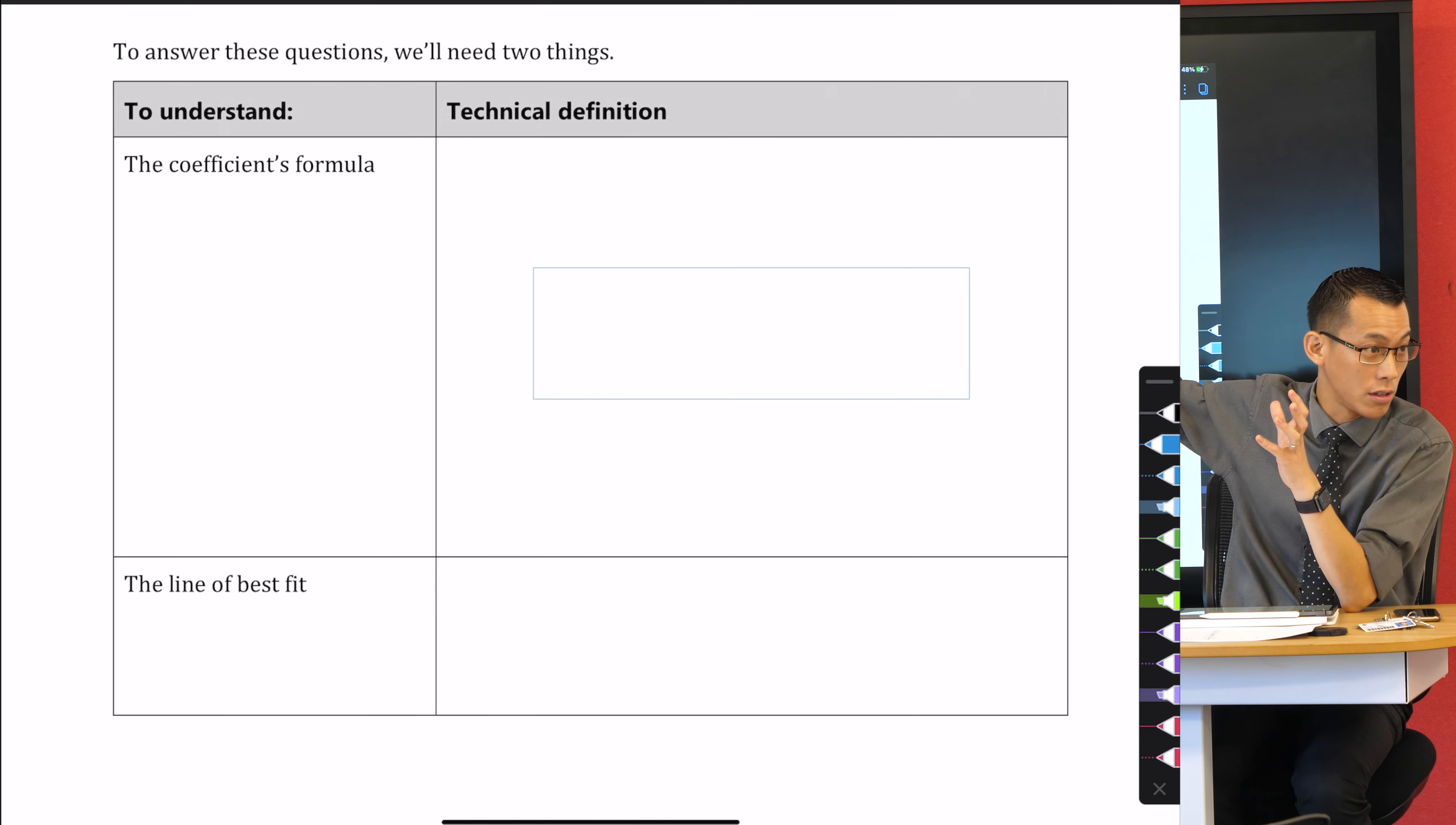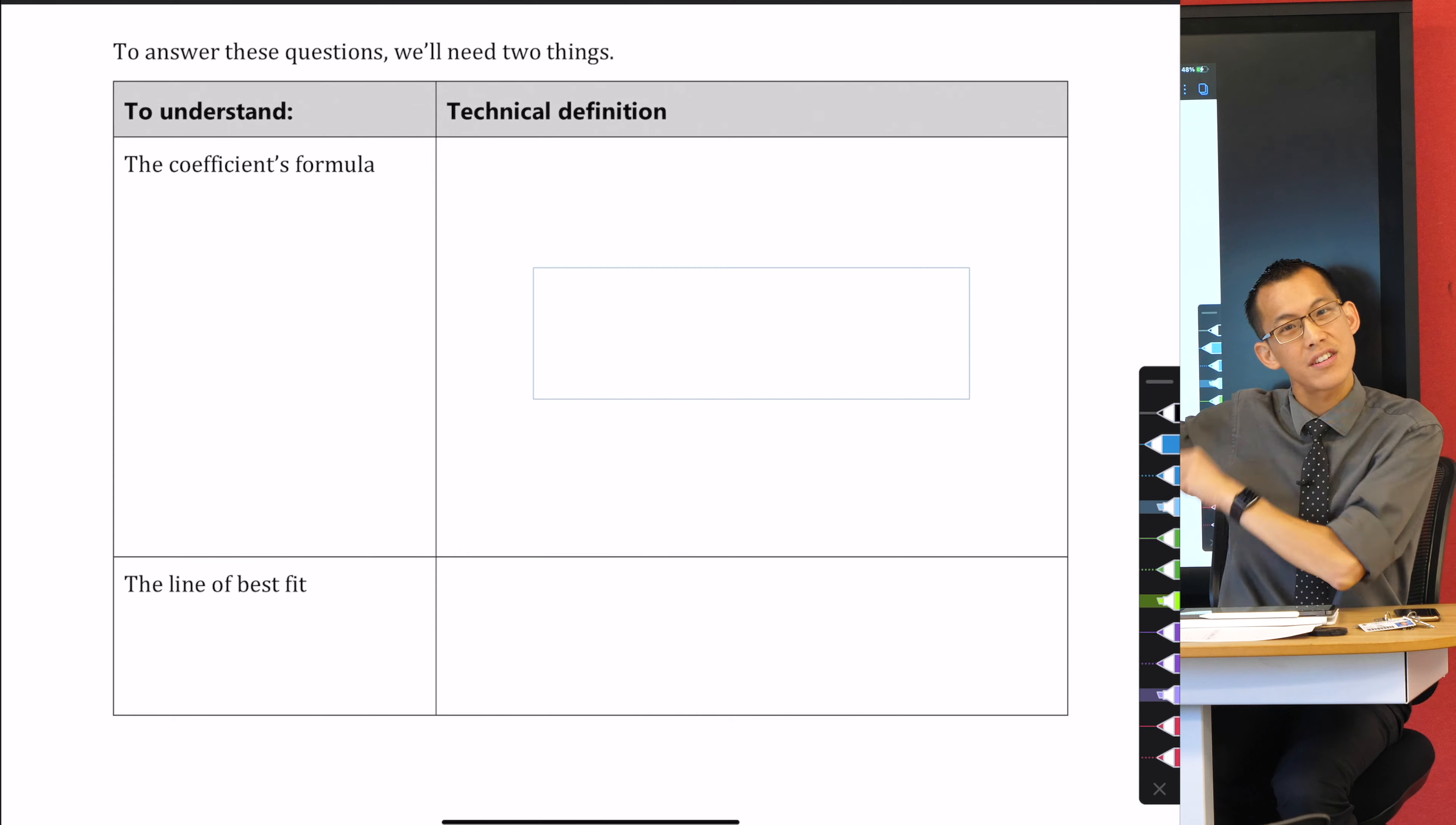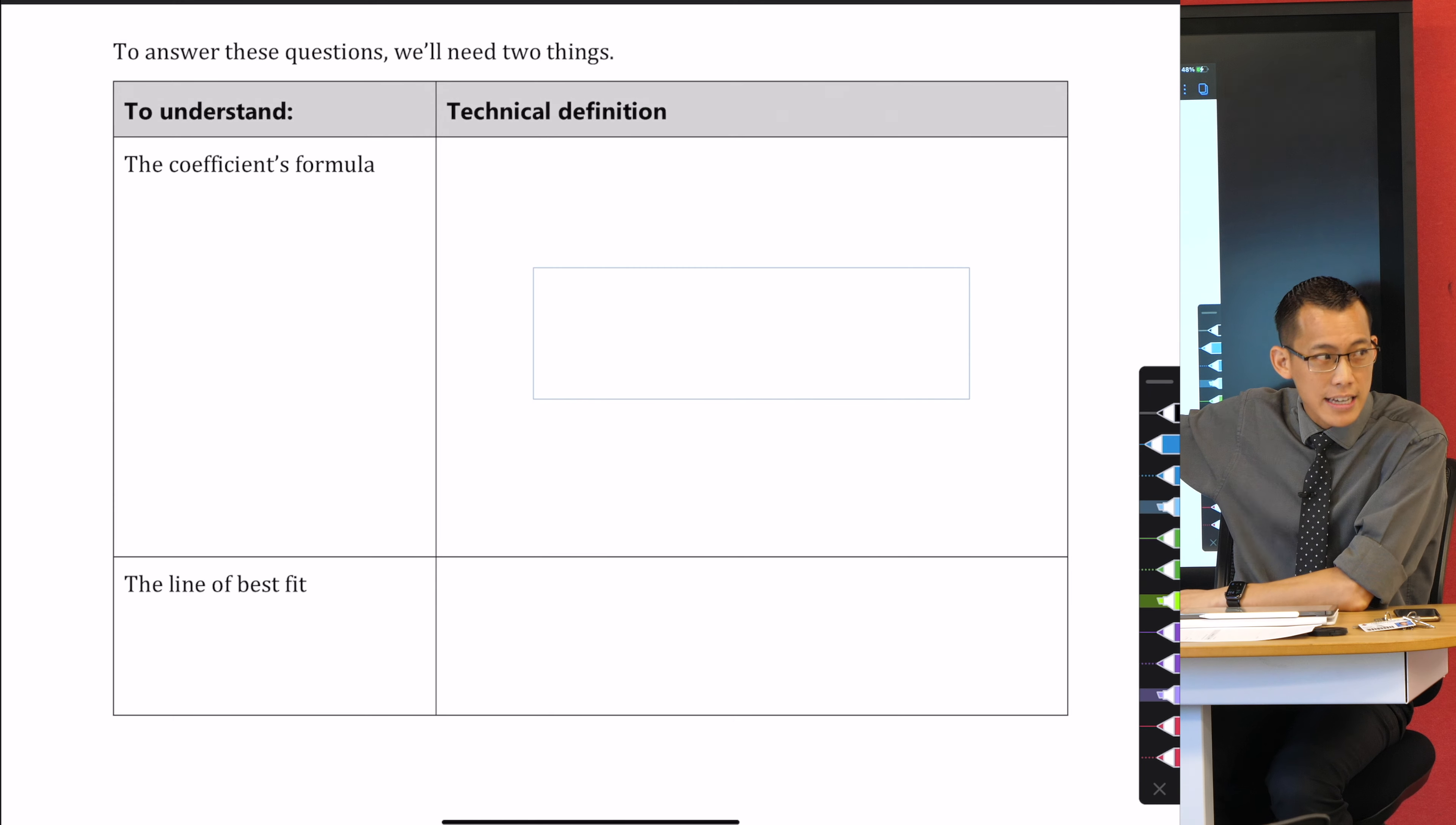We need to technically define what that coefficient is, Pearson's correlation coefficient, and we need to technically define this vague idea we've been talking about, the line of best fit. We're going to do both of those.